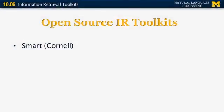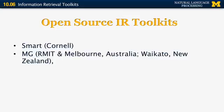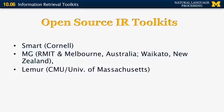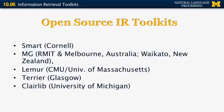The final segment on information retrieval is going to be a quick summary of existing information retrieval toolkits and datasets. There are a number of open source IR toolkits. Some of them are here just for historical reasons. There's the SMART system, MG from Australia and New Zealand, Lemur from Carnegie Mellon University and the University of Massachusetts, Terrier from the University of Glasgow, Clairlib from the University of Michigan, and also a very large open source project called Lucene from the Apache Foundation.